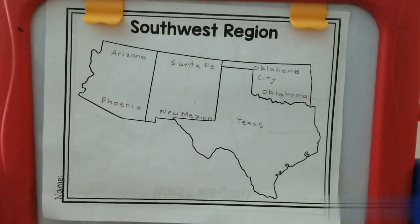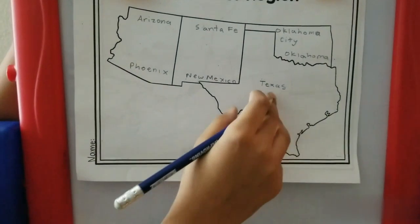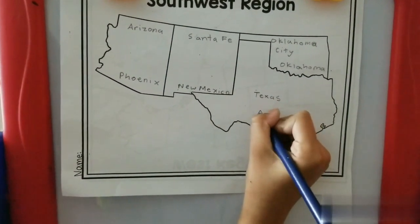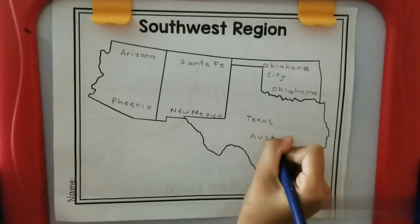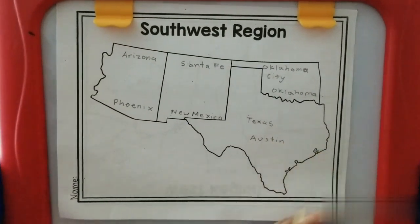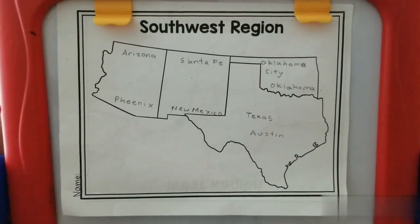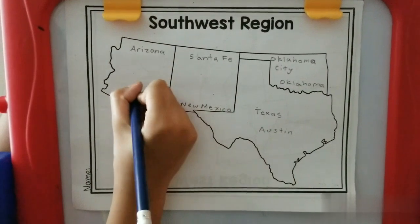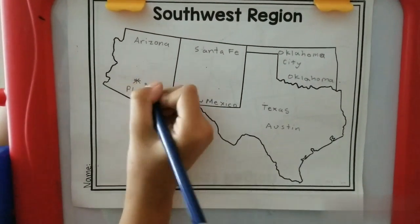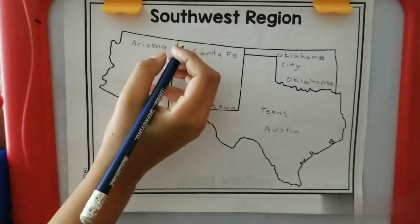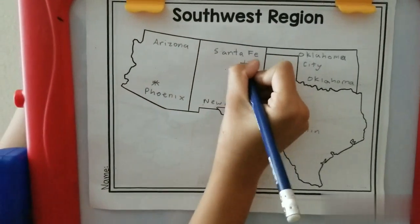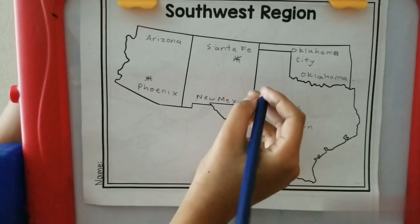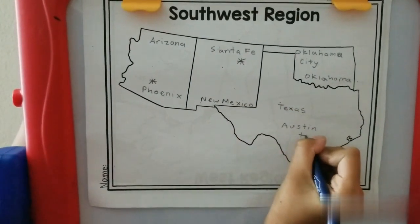For Texas, the capital is Austin. And for Oklahoma City, it is right here. For Santa Fe, it is right here. For Austin, it is right over here.